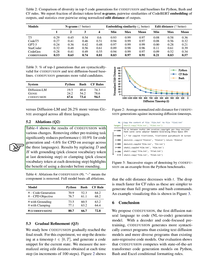The results when we replace D and H with grounding (choosing the closest vocabulary token at the last denoising step) or clamping (choosing the closest vocabulary token at each denoising step) highlight the benefit of using a decoder before rounding.